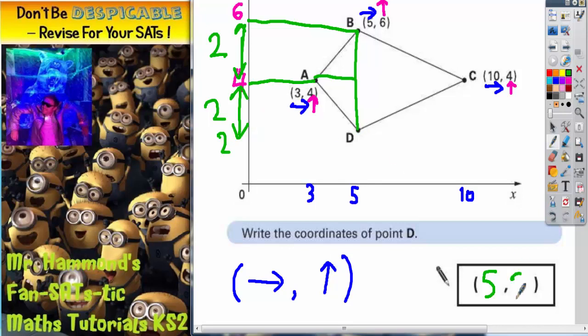So it's got to be 2 up. So the final answer is 5 along and 2 up.